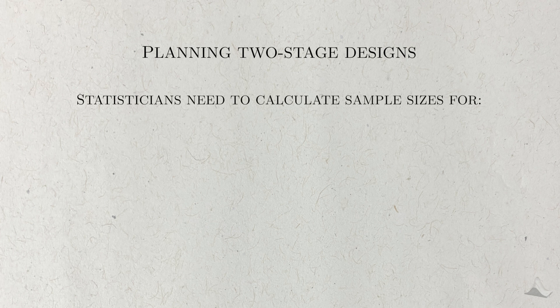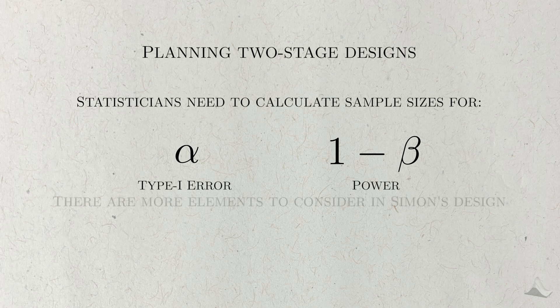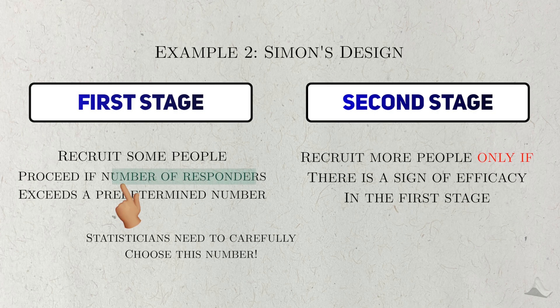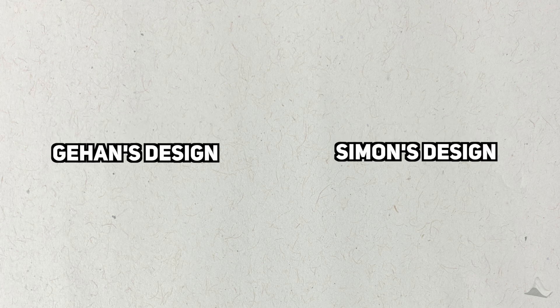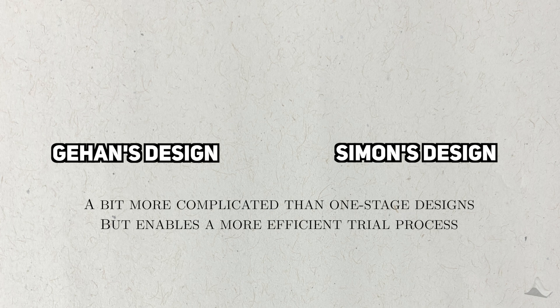Like with other trials, statisticians need to figure out the appropriate sample size to make sure that a trial has controlled power and type 1 error. In Simon's design, there's an extra wrinkle of needing to decide how many people need to respond in the first stage in order to move on to the second one, and this number influences both power and type 1 error. These stage 2 designs are a bit more complicated than the typical one-stage design, but this added complexity allows statisticians to save people time and money while preserving important characteristics of an experiment.